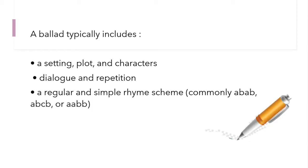A ballad typically includes a setting, plot and characters, dialogue and repetition, and a regular and simple rhyme scheme — commonly ABAB, ABCB, or AABB. In the following slide, I'll give you some examples.